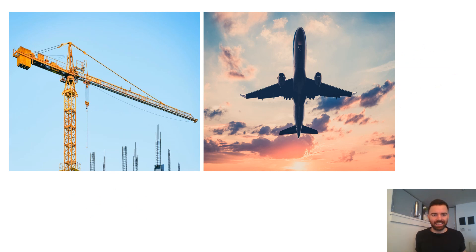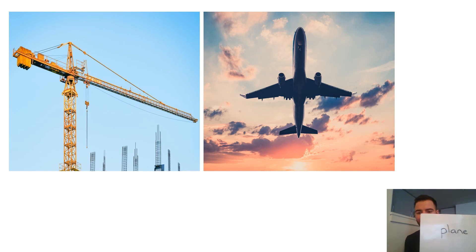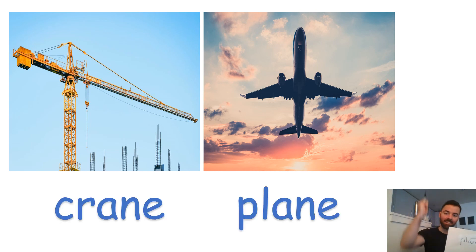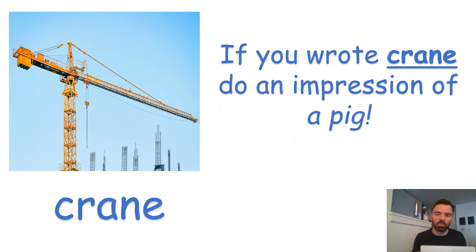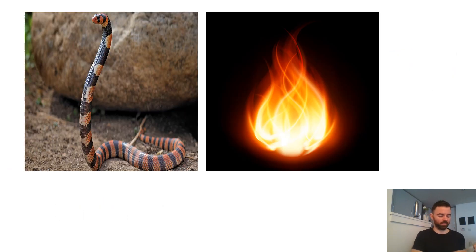Still the 'a' sound. Do you know what these ones are? I'm going to go with plane. I've got that magic E which makes the A — and a plane, of course I spelled it right, I'm the teacher! If you wrote crane, do an impression of a pig. You put your nose up a bit like this — how do they move as well, on their trotters?